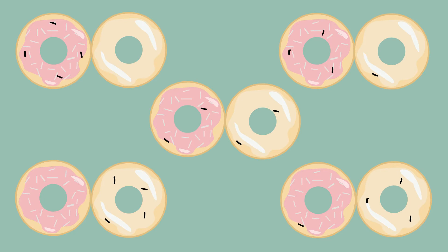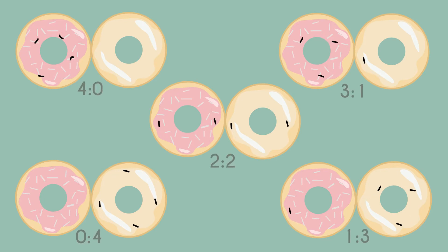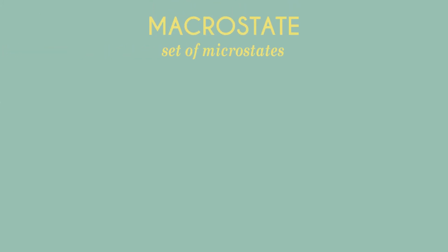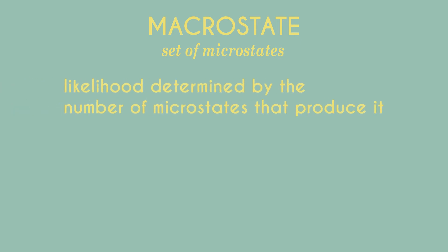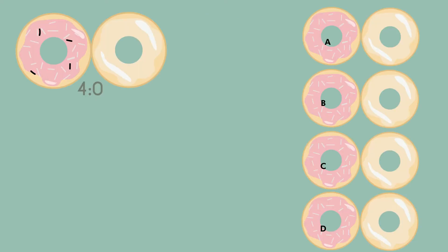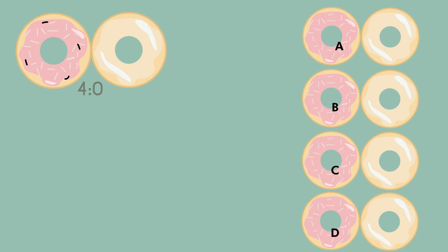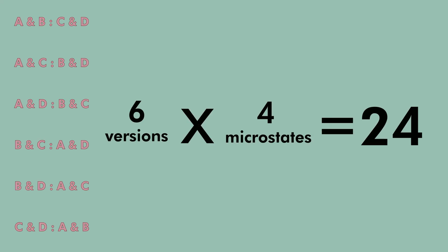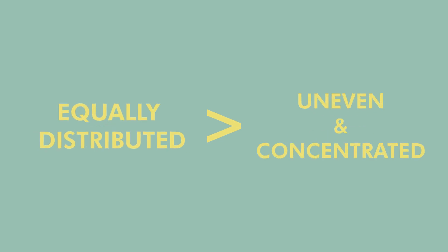A macrostate talks about the ratio of ants on frosted to ants on glazed. There are four ants, so only these ratios are possible. Macrostates are a set of microstates. Not all macrostates have the same likelihood of occurring, and the likelihood is determined by the number of microstates that produce that macrostate. Take 4 to 0 — four microstates produce it, meaning ants A, B, C, and D are all on the frosted donut. Macrostate 2 to 2 has 24 microstates. This means the ants would rather be equally distributed than concentrated on a single donut.